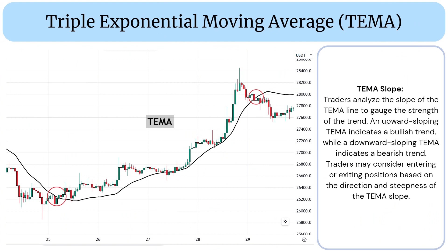TEMA Slope: Traders analyze the slope of the TEMA line to gauge the strength of the trend. An upward-sloping TEMA indicates a bullish trend, while a downward-sloping TEMA indicates a bearish trend. Traders may consider entering or exiting positions based on the direction and steepness of the TEMA slope.